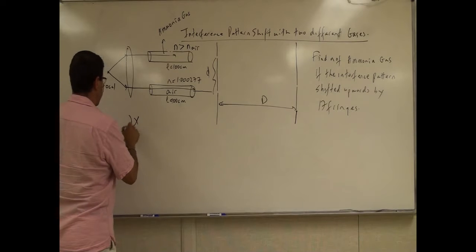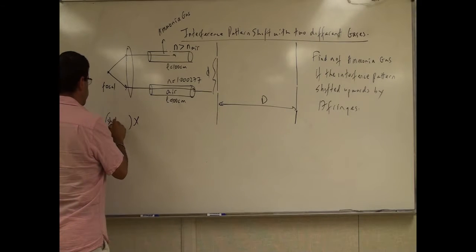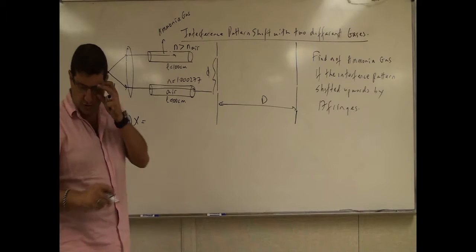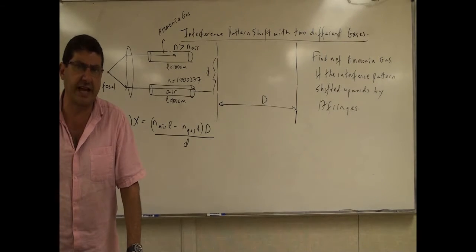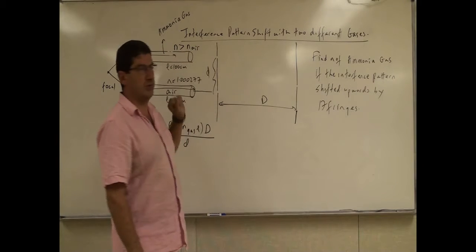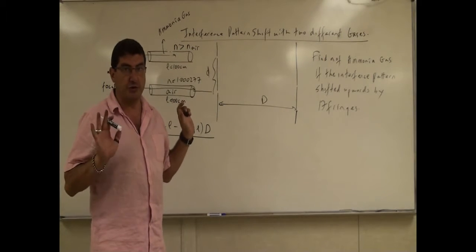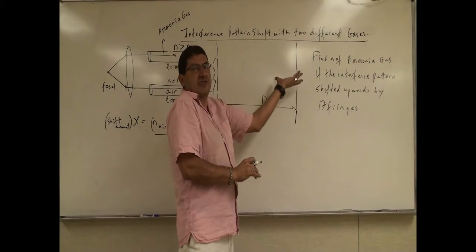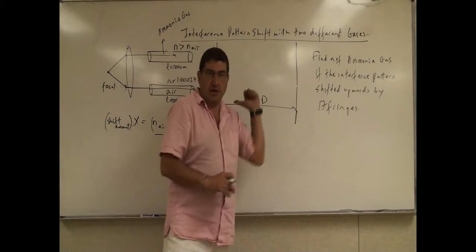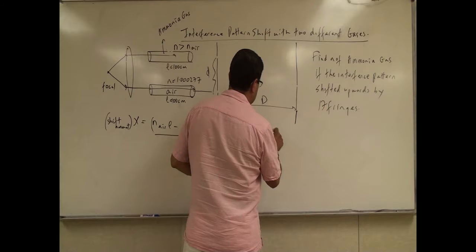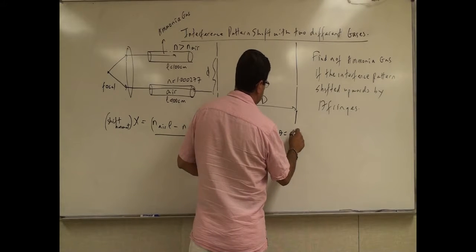X equals shift amount. And then what was that equation? X is equal to, now in this case, they didn't actually tell us the distance to the screen and the distance between the slits. We don't even know that. But the only thing that's given is that the shift is a complete 17 fringe shift. So then what we can do is we can use the other equation that we have.